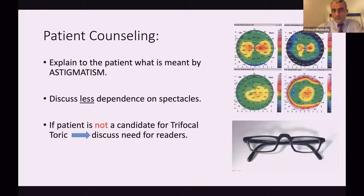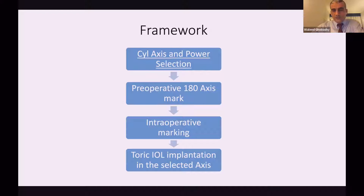The framework is just four steps. First, cylinder axis and power selection. Second, preoperative 180-degree axis marking, which is usually done in the preoperative room. Third, intraoperative marking for the desired axis. And finally, TORIC IOL implantation at the selected axis.